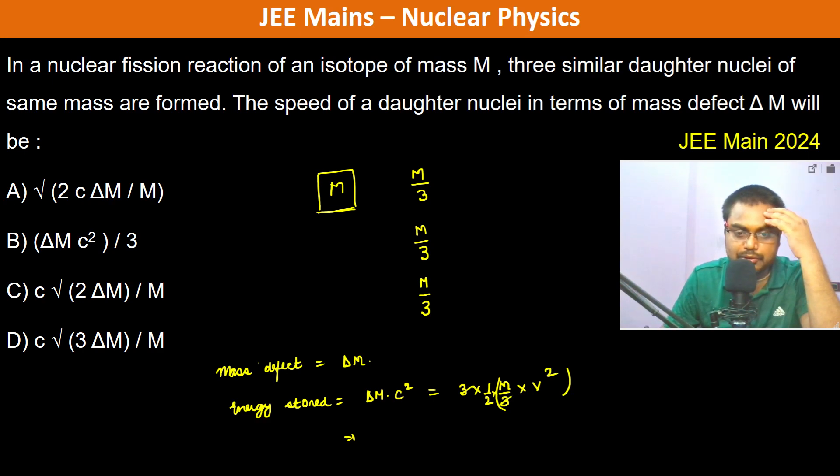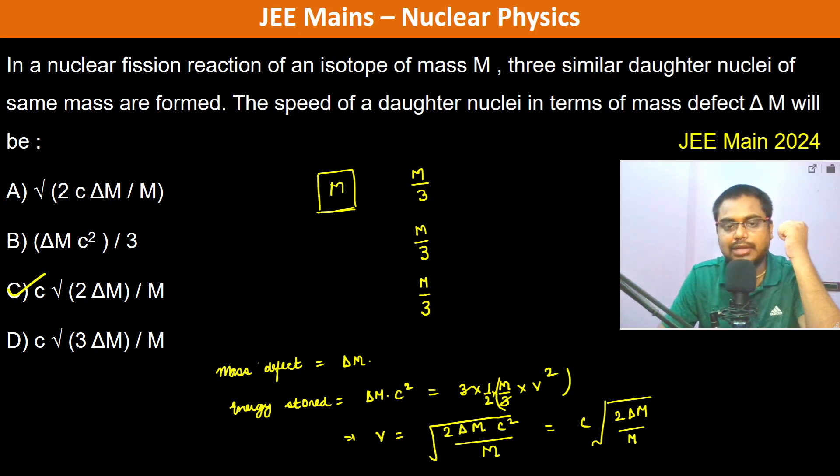Therefore, v equals the square root of (2ΔM·c²/M), which simplifies to c·√(2ΔM/M). So option C is the answer.